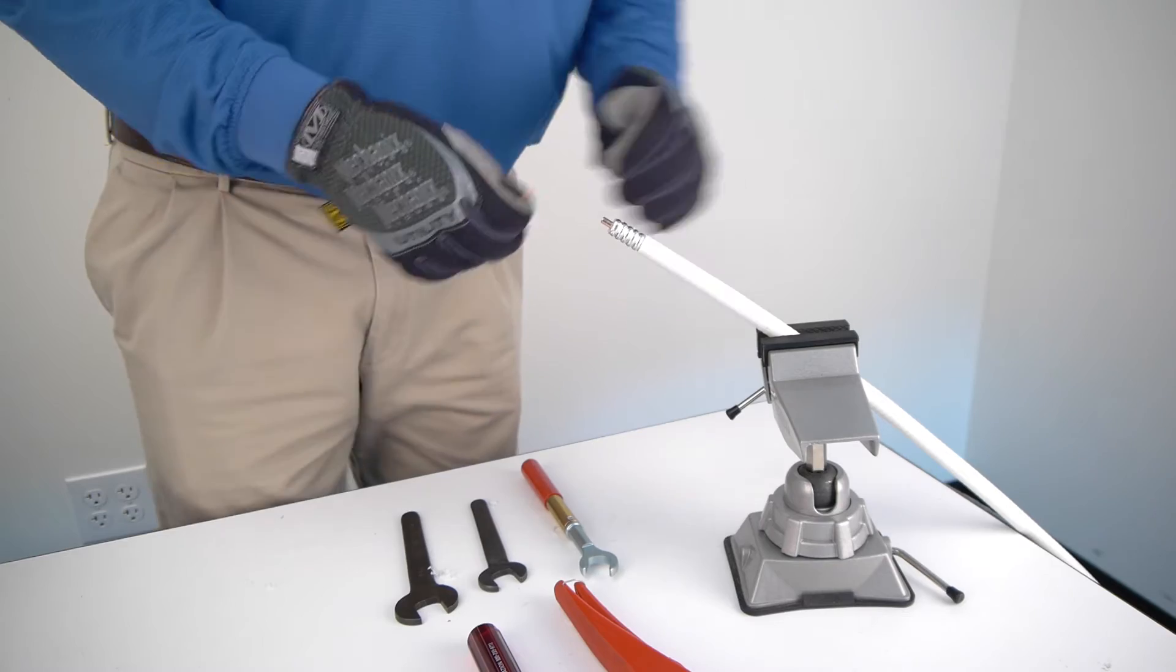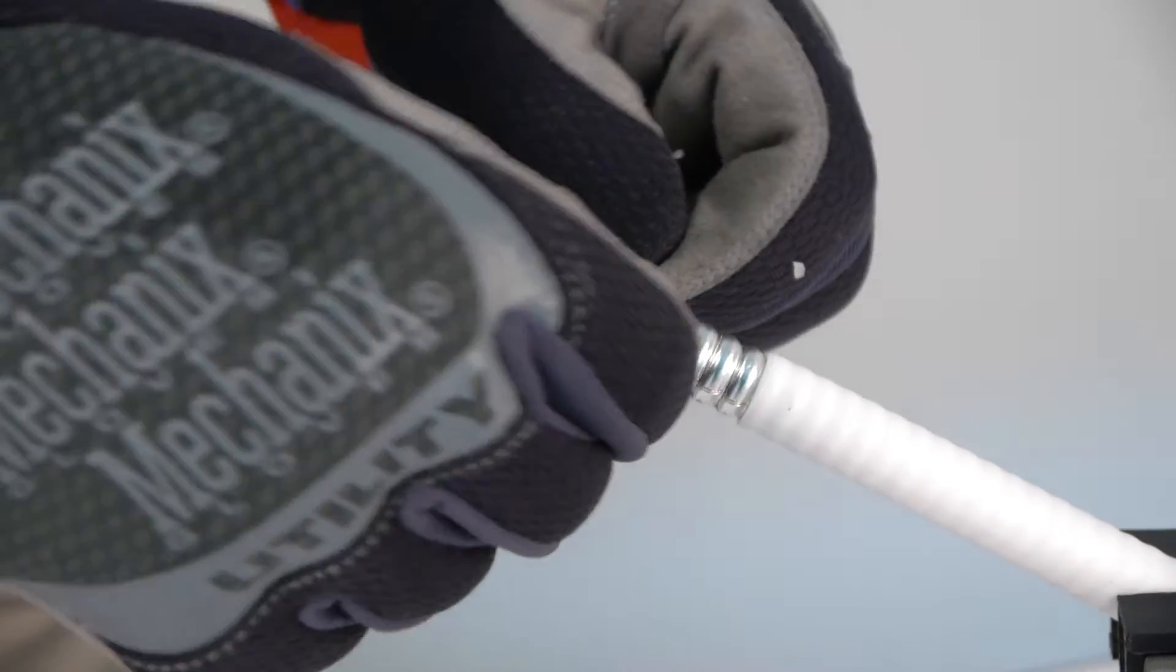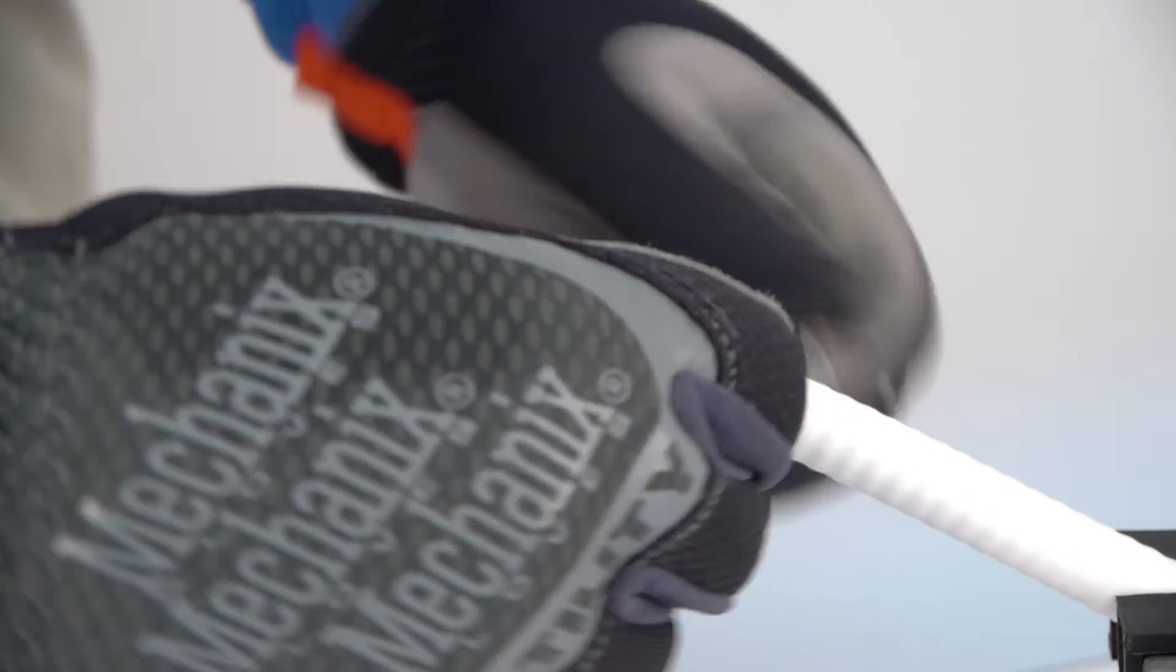Thoroughly clean any excess material and debris. Install o-ring onto cable at third corrugation from jacket.